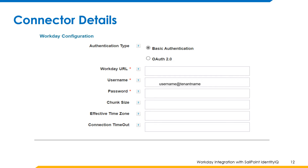For example, ACT, EST, CST. We will set this parameter to customize the aggregation and fetch data based on the configured time zone. Connection timeout: provide the timeout value in minutes. The default value is 1 minute.